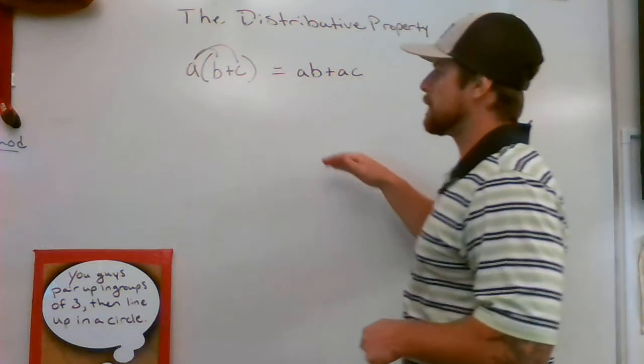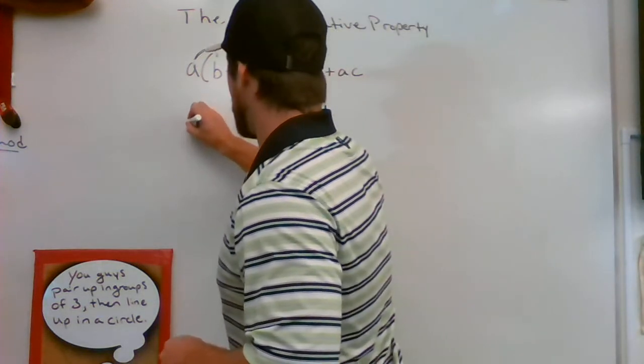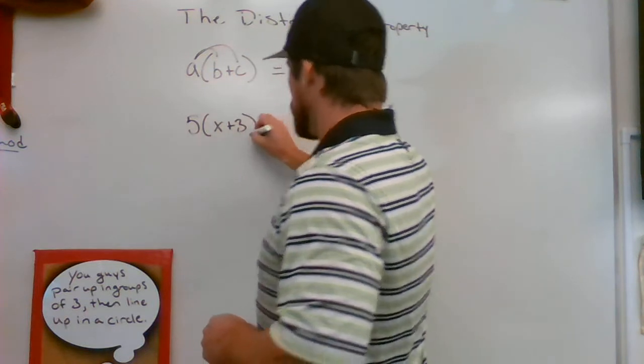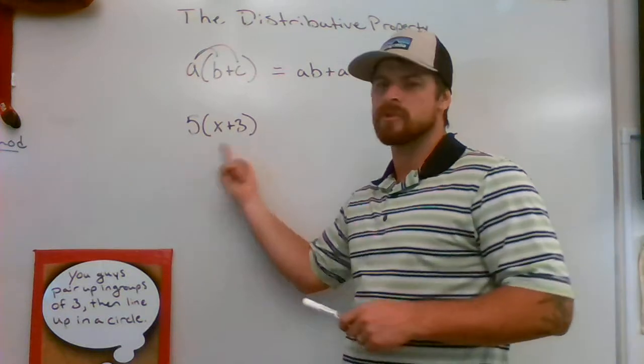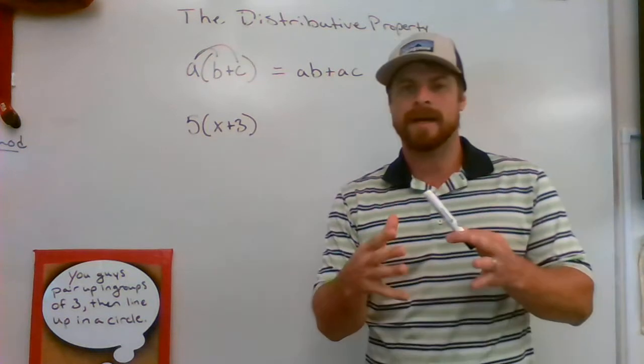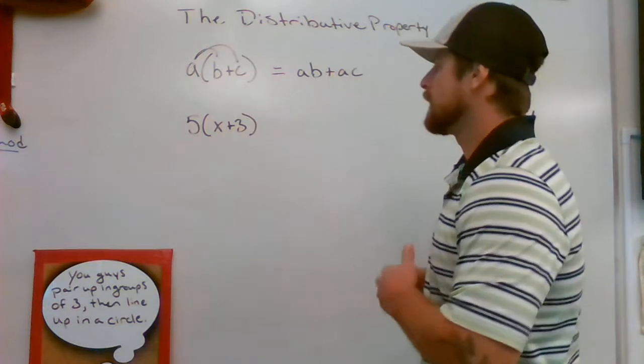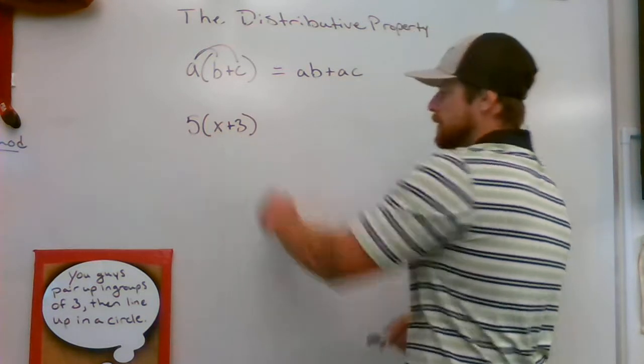Now if I wanted to throw some numbers at you, how would this look with some numbers? Five on the outside of X plus 3. Notice we're now dealing with two terms on the inside of the parentheses of the grouping symbols that we cannot combine. We cannot combine an X and a 3 through addition. It's an impossible feat. Okay, so we can't combine these, therefore they're looked at as two separate terms.